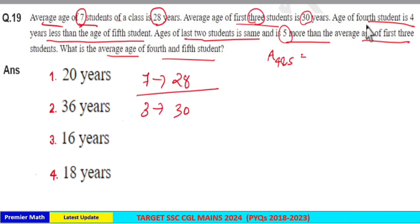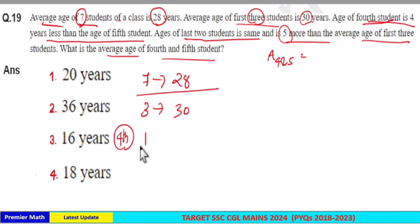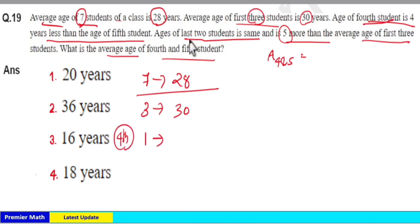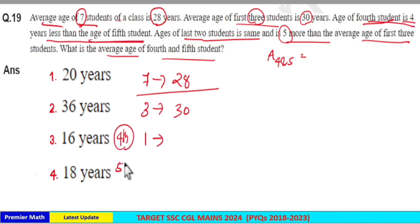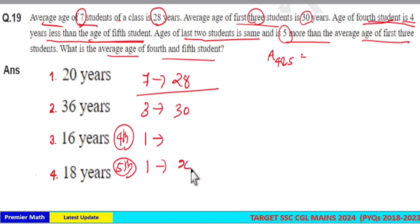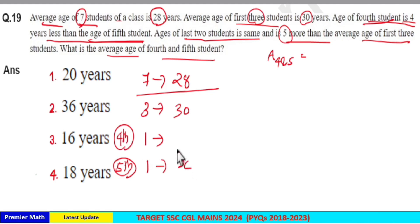Now, the age of the 4th student — there is only 1 student here. The age of the 4th student is 4 years less than the age of the 5th student. Consider the age of the 5th student as x — that's only 1 student. Then the age of the 4th student is x minus 4.